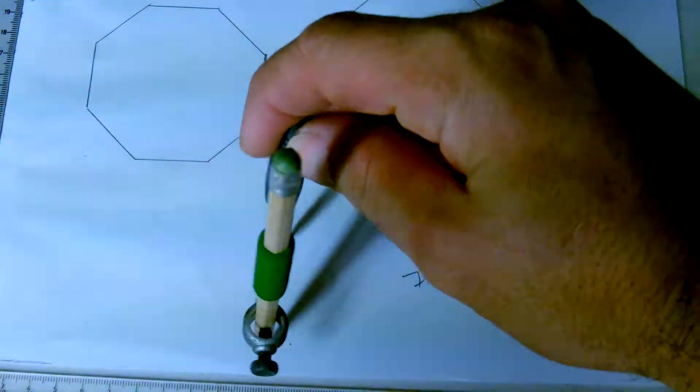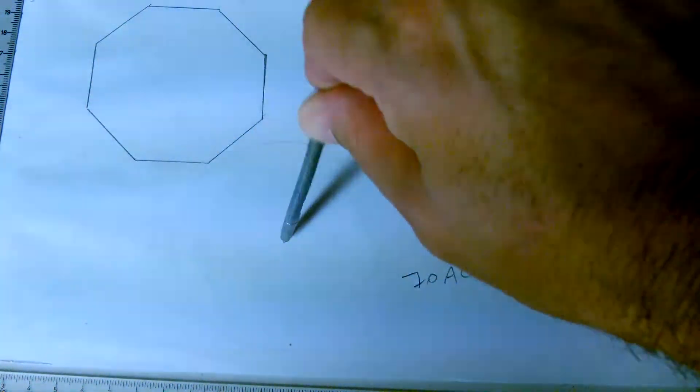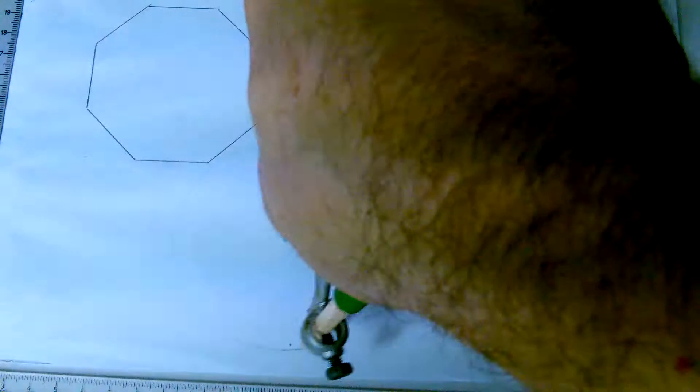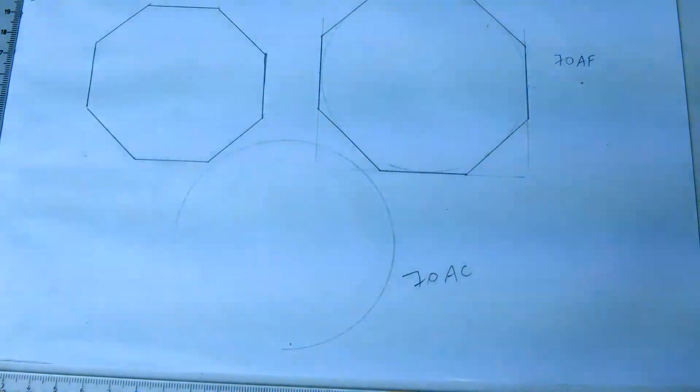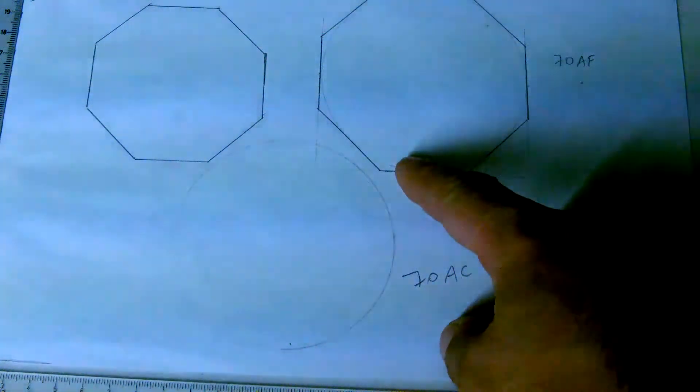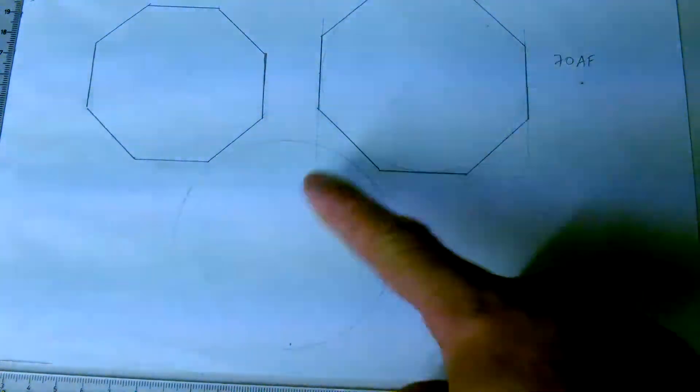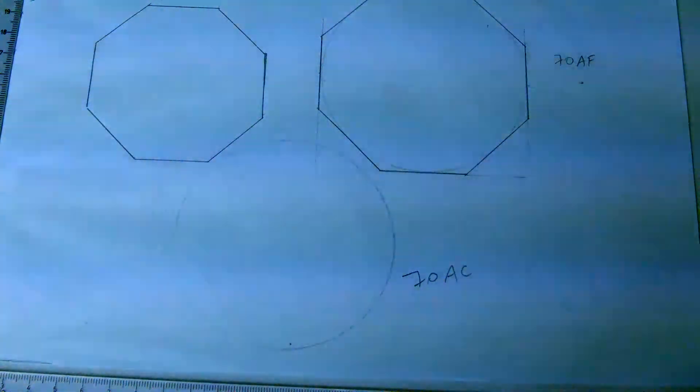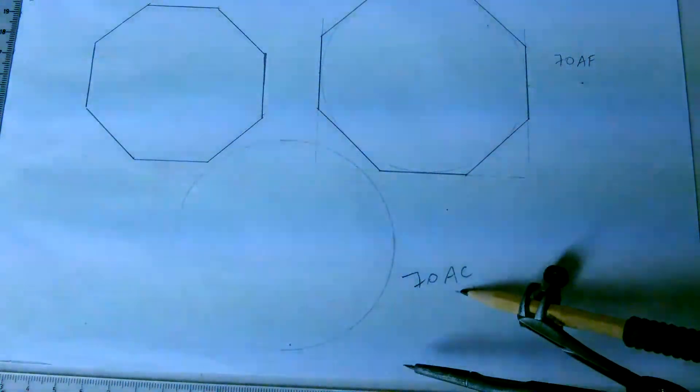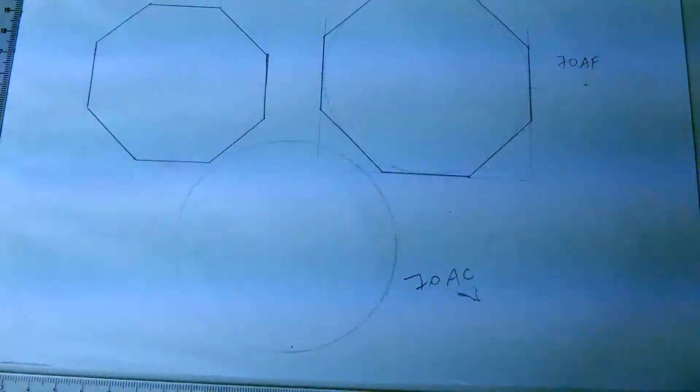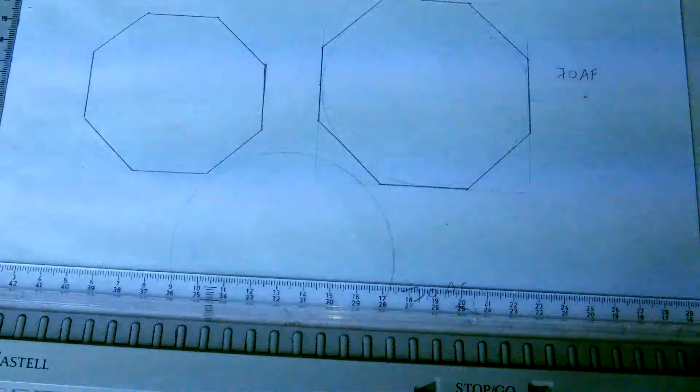So again, I'm going to draw the same circle, it's 70 diameter. But this time I need the octagon on the inside, not on the outside. So the corners, the corners would be touching the circle, not the faces.